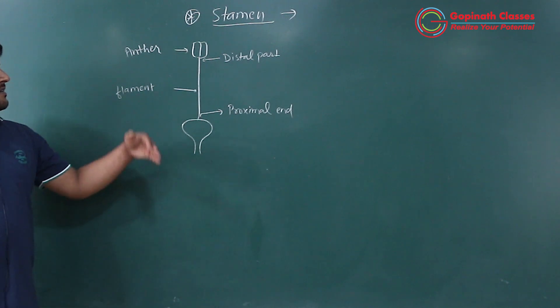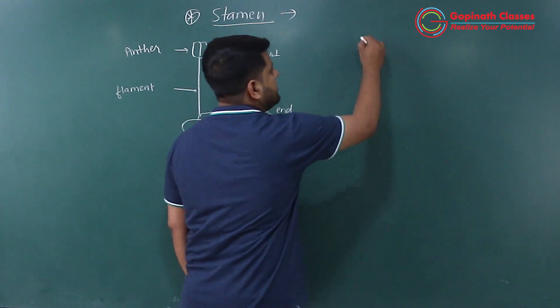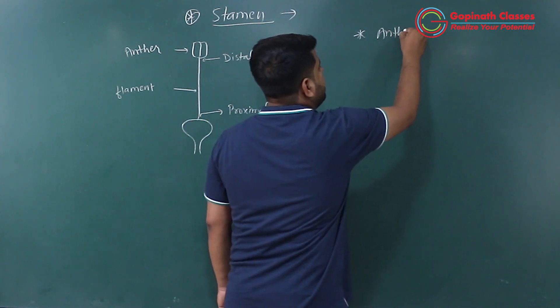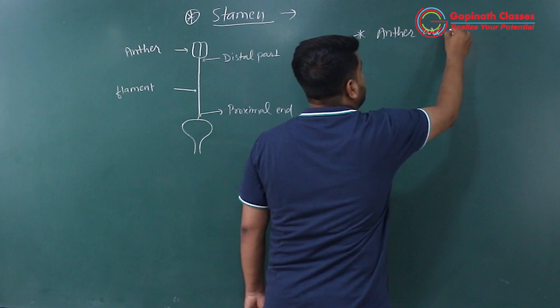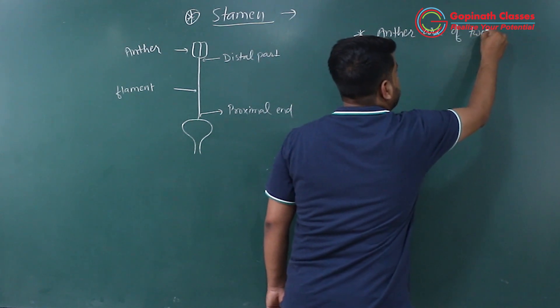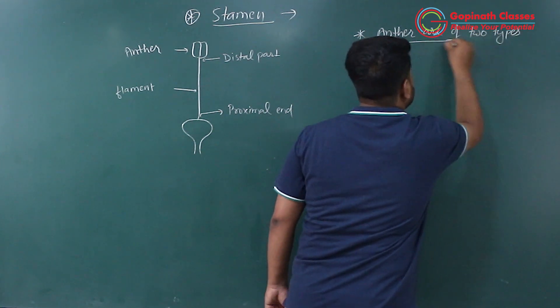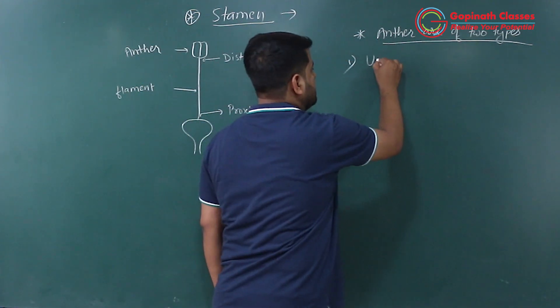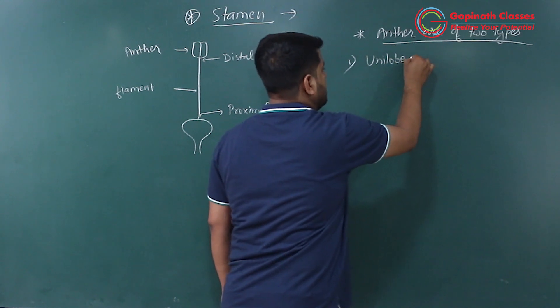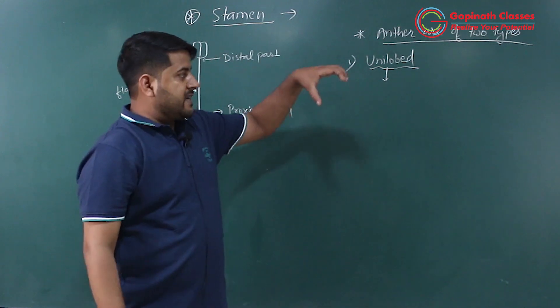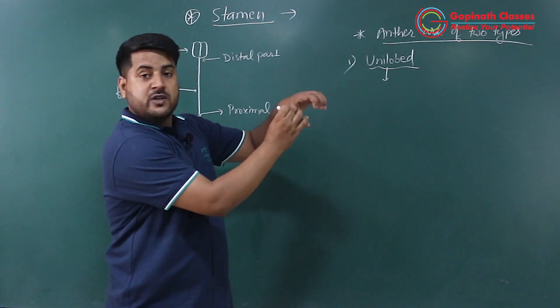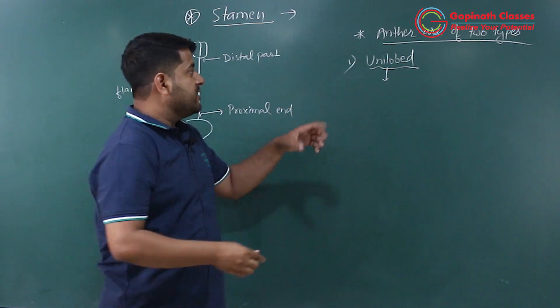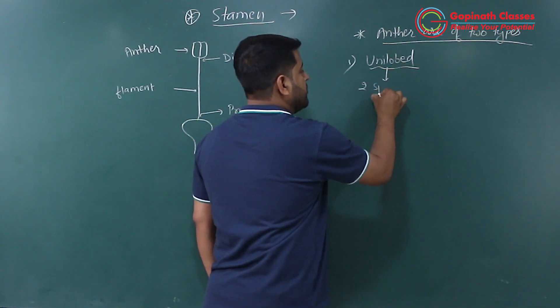Now let's look at what kinds of anther there are. Anther has many types, mainly two types. First one is unilobed. If there is one type of lobe, then there are two sporangia which we can see in the structure.